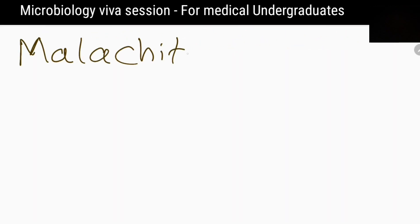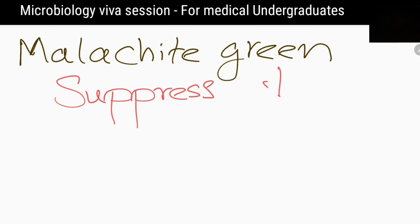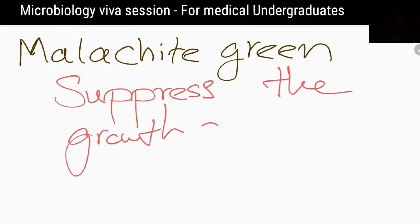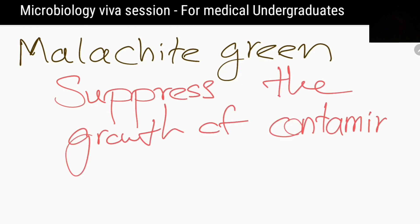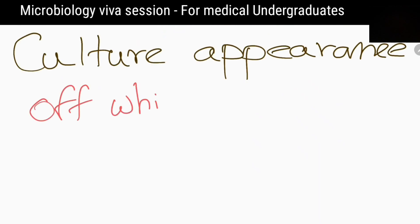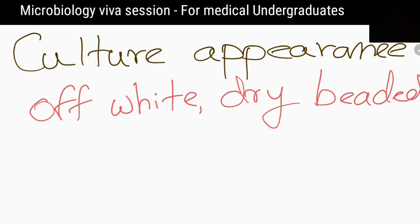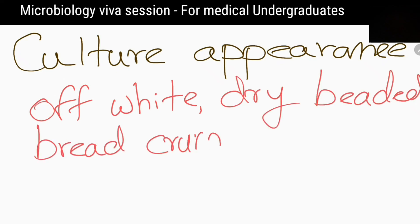What is the function of malachite green in the culture medium? It suppresses the growth of contaminating bacteria. What will be the culture appearance of Mycobacterium tuberculosis? It will appear as off-white, dry, granular, breadcrumb-like colonies.